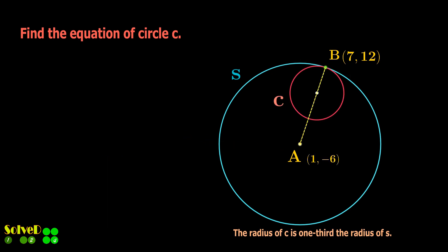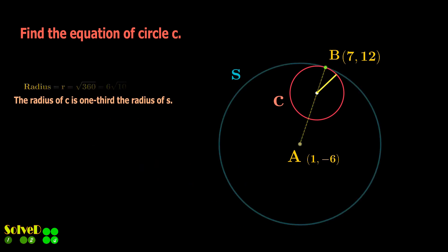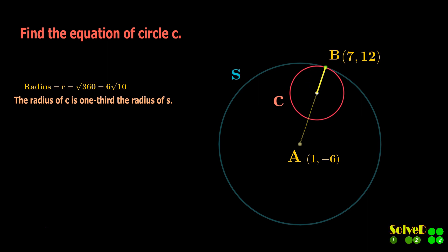Now let's find the radius and the center of circle C. The radius of C is one-third of the radius of S. Now let's find the center of C, that is K.